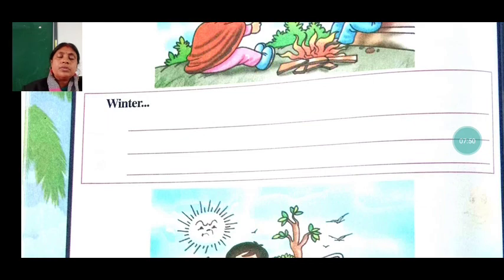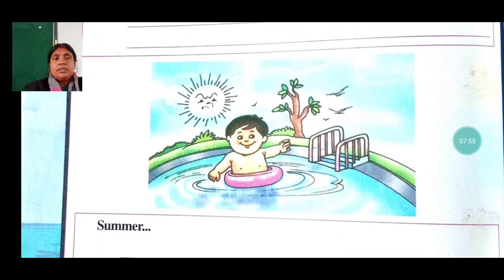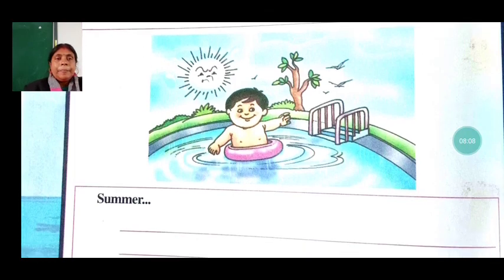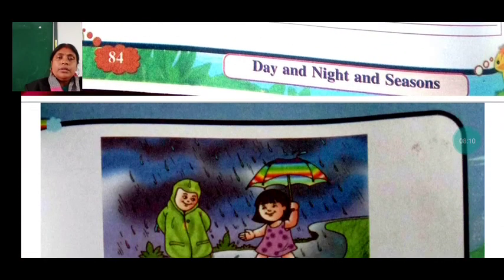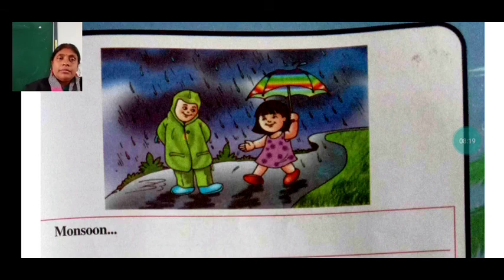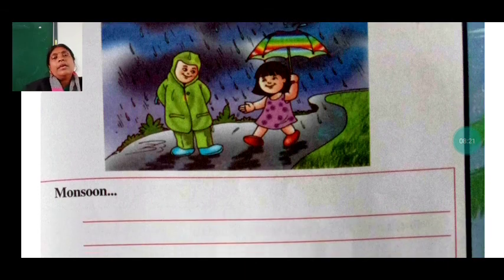You have to write a few lines about each season in your workbook. In summer, we love to go swimming — we love to be in the water during the hot season. In the rainy season, we wear rain coats and carry umbrellas and enjoy the rain during the monsoon.